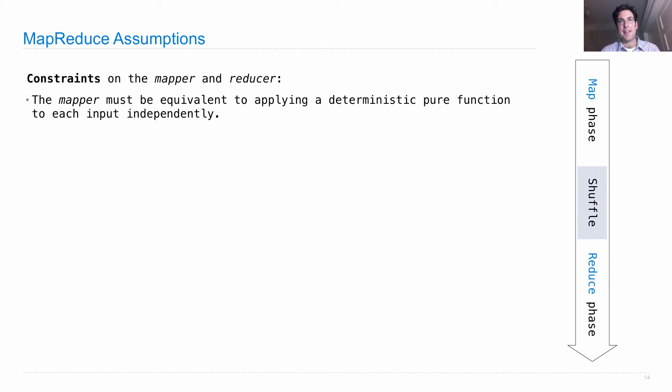This is important because then the system can decide how to divide up the total input data among the different mappers, without worrying that it will get a different answer depending on how it partitions up the input.